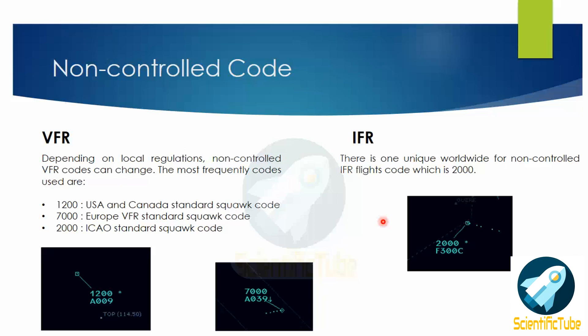Let's take another scenario where a passenger airliner wants to go VFR and cancel IFR. He calls: 'Chennai Approach, Jet Airways 123, request cancellation of IFR and go visual.' The Chennai Approach controller responds: 'Jet Airways 123, roger, IFR cancelled at 1200 Zulu, resume own navigation, frequency change approved, squawk VFR.' Again, the controller instructs squawk VFR, meaning the pilot is to squawk 1200.